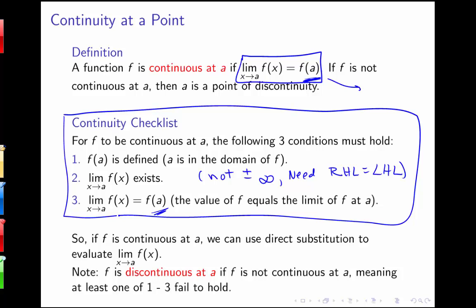This also tells us that if we have a continuous function, we can use direct substitution to evaluate the limit. Anytime you have a continuous function, you can use direct substitution: the limit as x goes to a of f(x) equals f(a). A function is discontinuous at a if one of the three conditions fails — either f(a) is not defined, the limit doesn't exist, or the limit exists and f(a) is defined but they're not equal.